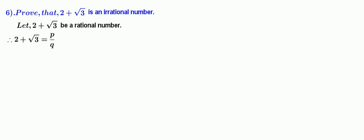Let 2 plus root 3 be a rational number. Therefore, 2 plus root 3 is equal to P by Q, where P, Q belongs to Z and Q is not equal to 0.